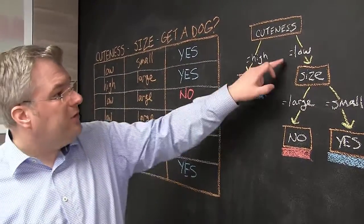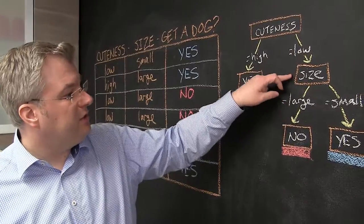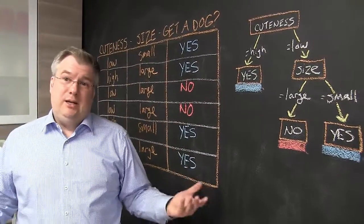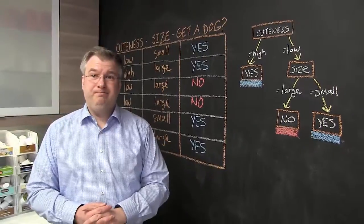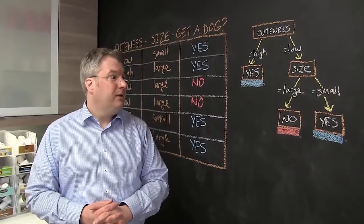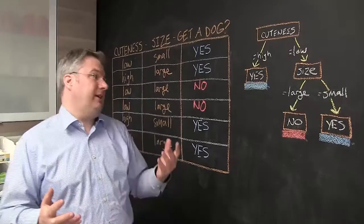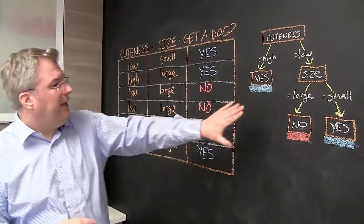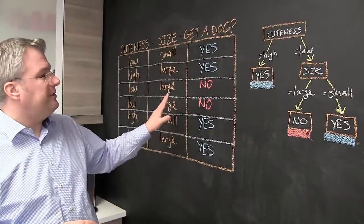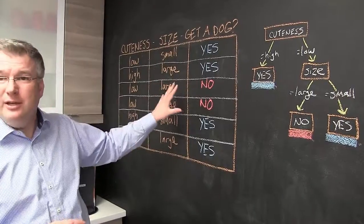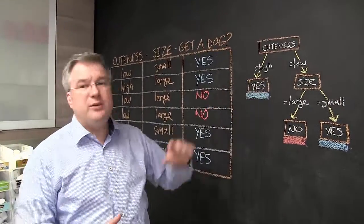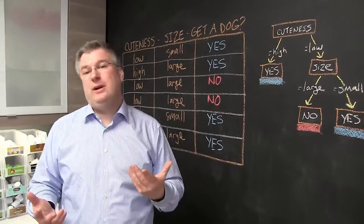We first pick cuteness. And if the cuteness is high, of course people are getting the dog. And if the cuteness is low, they are also paying attention to the size. And if the dog is unfortunately large — poor dog — it's not picked. So that's the result, and this is the data. The big question is: how do we get from here to here?